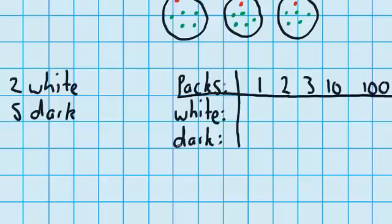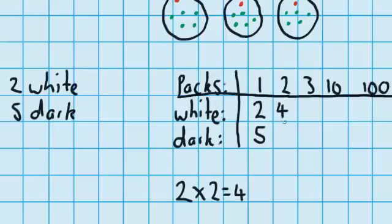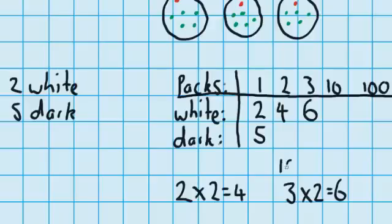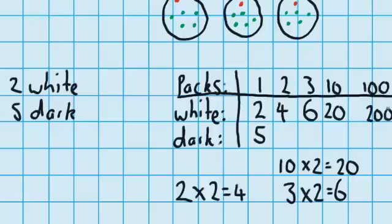Here I've got my white chocolates and my dark chocolates. We can start by filling in one pack: two white pieces and five dark pieces. For two packs, there are two white pieces in each pack, so two lots of two is four. For three packs, three lots of two is six. Moving up to ten packs — ten packs with two in each means twenty. And for a hundred packs, two in each pack means two hundred white pieces of chocolate.